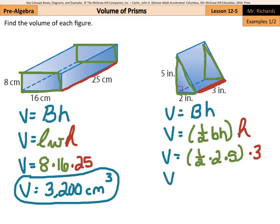So my area of the triangle: one half times 2 times 5 is 5, still times that 3, which is the height of the prism. And so my final volume is going to be 15 inches cubed.